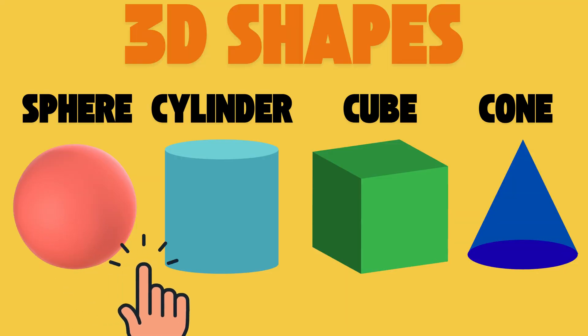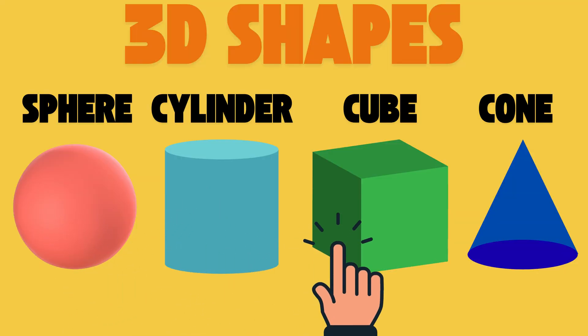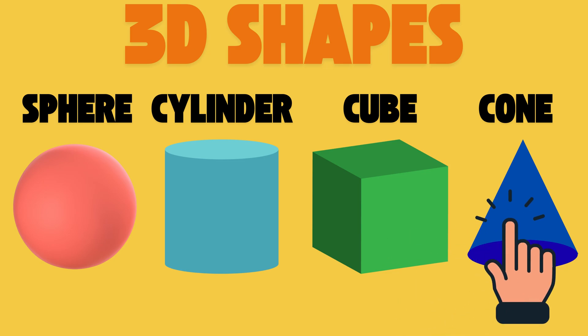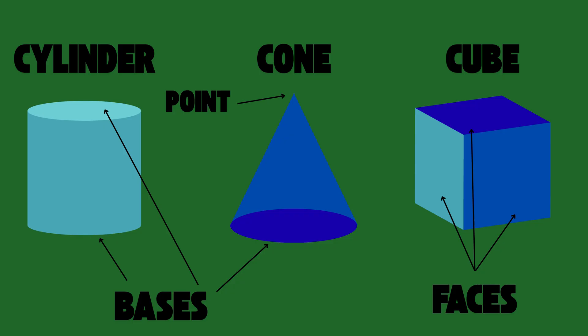Sphere, cylinder, cube or cone. Learning 3D shapes, we're in the zone. A 3D shape will have faces. Some may have points or bases.